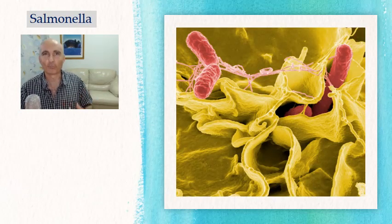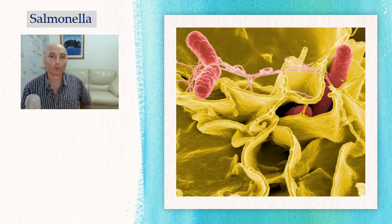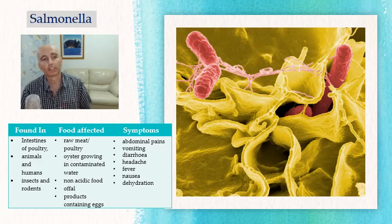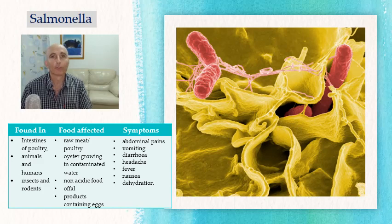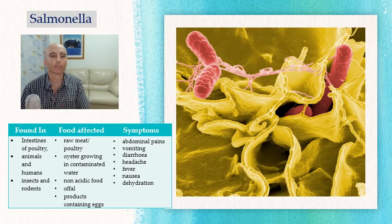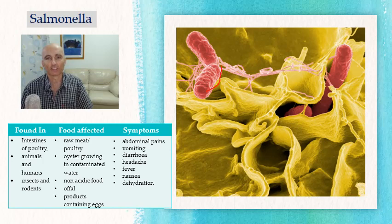The best known of all is Salmonella. It does not form spores and symptoms can appear between 5 and 48 hours after exposure. It can be found in the intestines of poultry, animals, humans, insects, and rodents. Foods affected include raw meat, oysters growing in contaminated water, and non-acidic foods. Symptoms include abdominal pain, vomiting, diarrhea, headaches, fever, and nausea. You can see a great photo of Salmonella here — we definitely do not want to see this in our food.